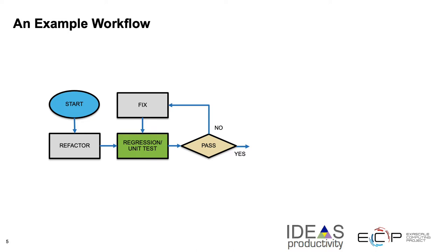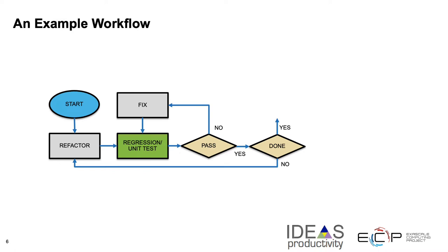Once your regression or unit tests have passed, you go on to the next stage and question whether this is all you wanted to do in this round of refactoring. If you are done, then we go on to the final stage. But if you are not done, we go back and refactor and run the regression or unit tests again. If passed, we move on to the next decision point. If not, we fix the code and keep doing this loop until we are satisfied.